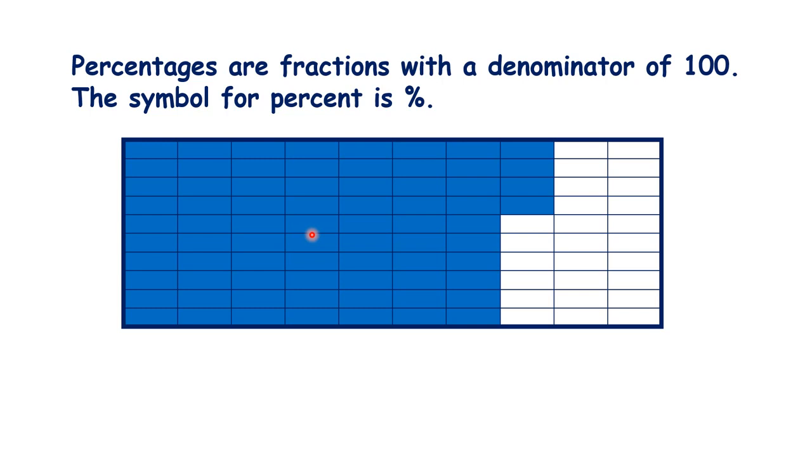And we already know about hundredths because we know that 74 hundredths is written 0.74 as a decimal. We know that the second place value after the decimal point is the hundredths place value column. A percentage is just a different way of expressing a hundredth. So this is 74%.